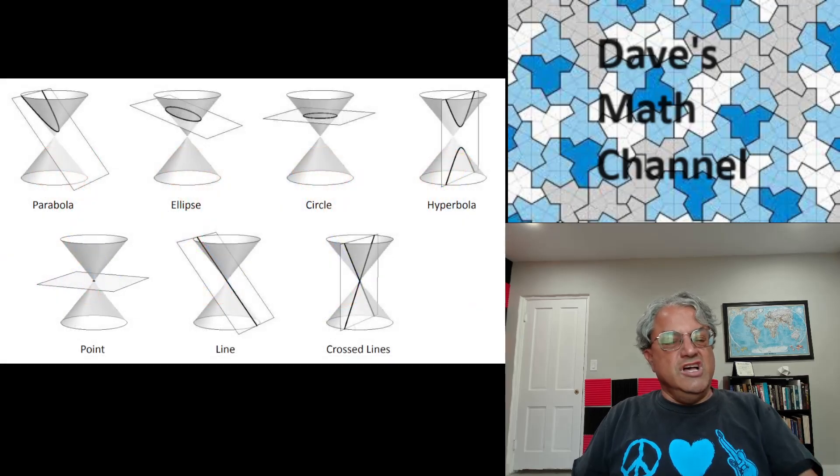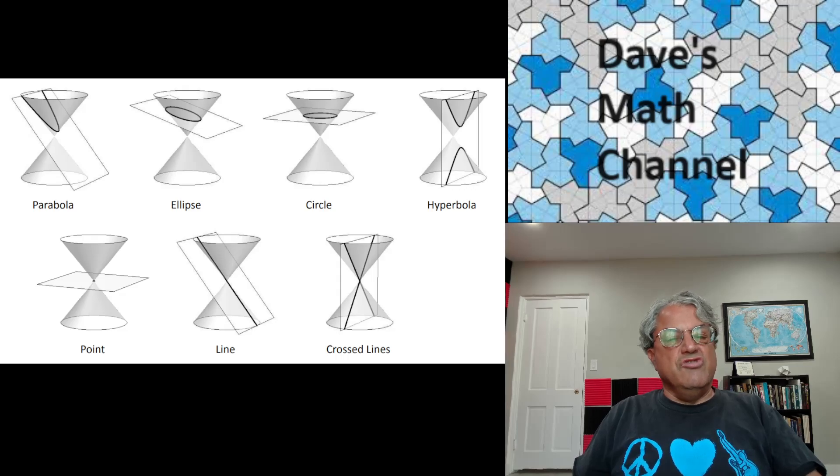And actually, I lied a little bit because there are three sort of degenerate cases in addition to these four. There's cases where you don't get a conic section at all. I mean, you could put the plane right straight through the middle of the cone, which is just the vertex, and then you just get a point. Or you could intersect the plane with the axis that generates the cone, and then you get just a single line.